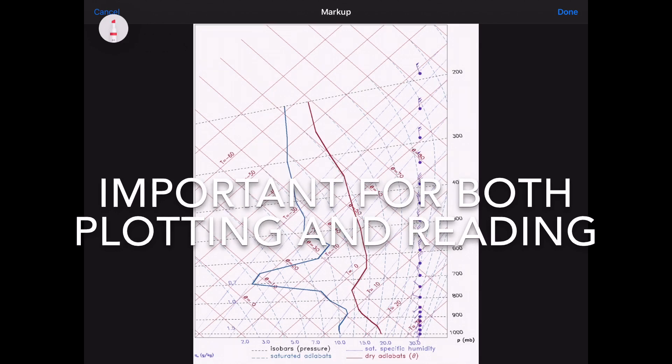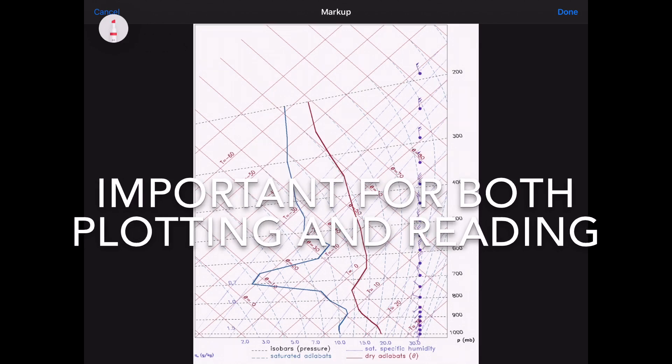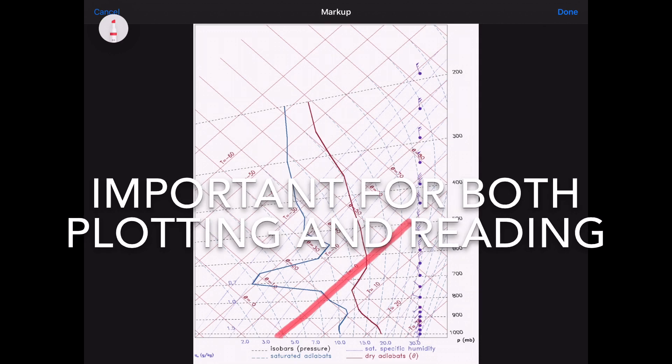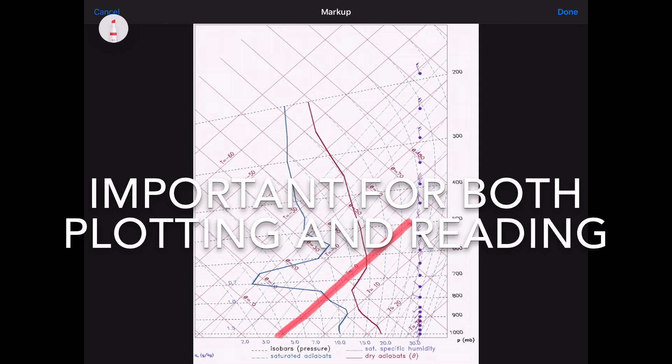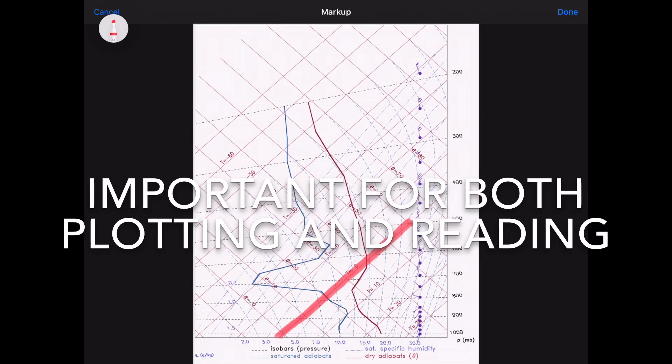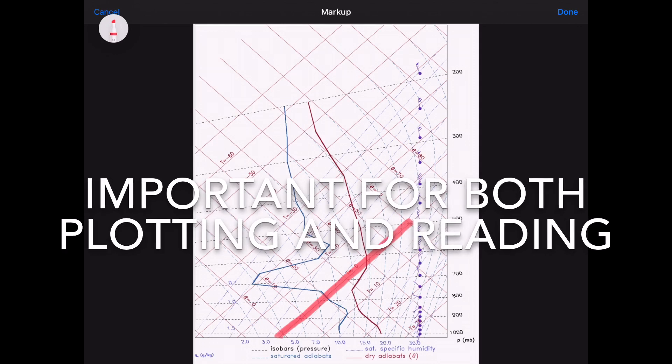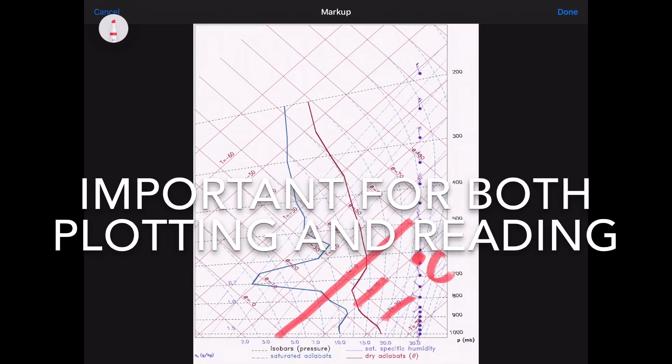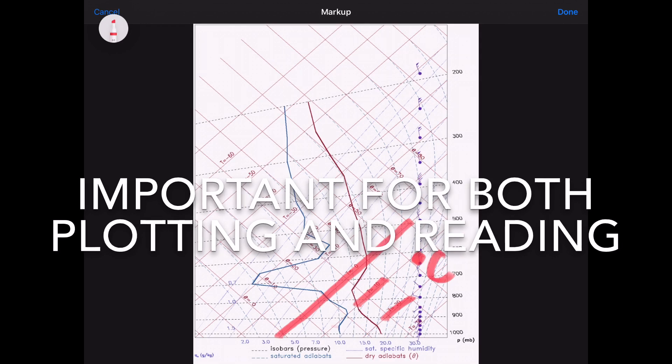Okay so the second constant are these red lines that go from bottom left to top right and they are known as isotherms. Okay so everything along these lines is of equal temperature. So we've got T equals zero, T equals 10, T equals 20 and they're degrees centigrade. Okay so that's the second constant.